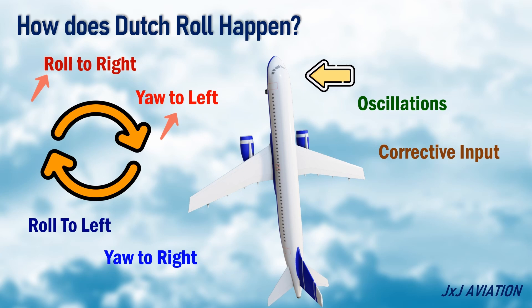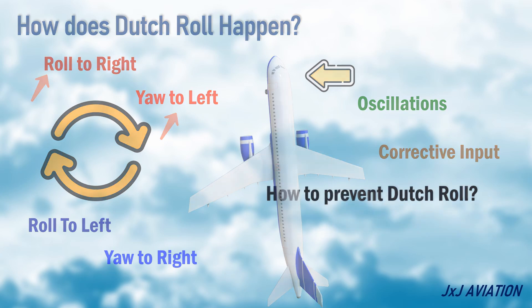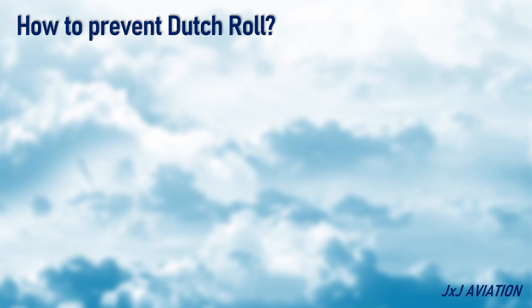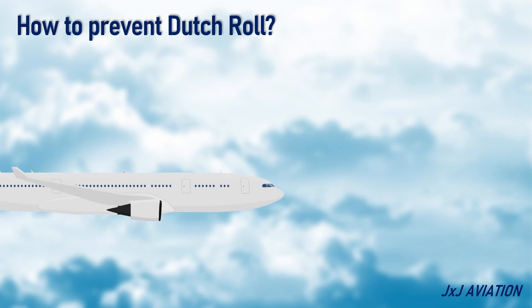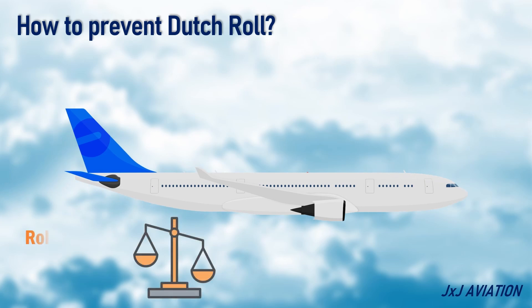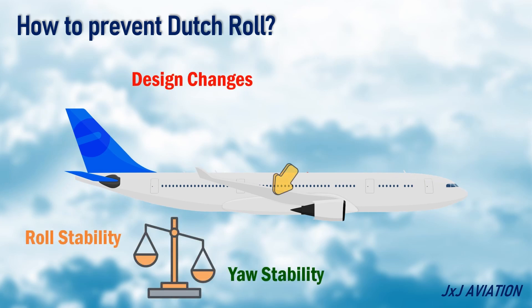Now let's see how the Dutch Roll can be prevented. In modern aircraft design, a balance has to be achieved with the roll stability and the yaw stability by making design changes on the wing and the vertical stabilizer to prevent Dutch Roll. Modern aircraft are also installed with a yaw damper system which adjusts the rudder automatically to recover from a Dutch Roll.